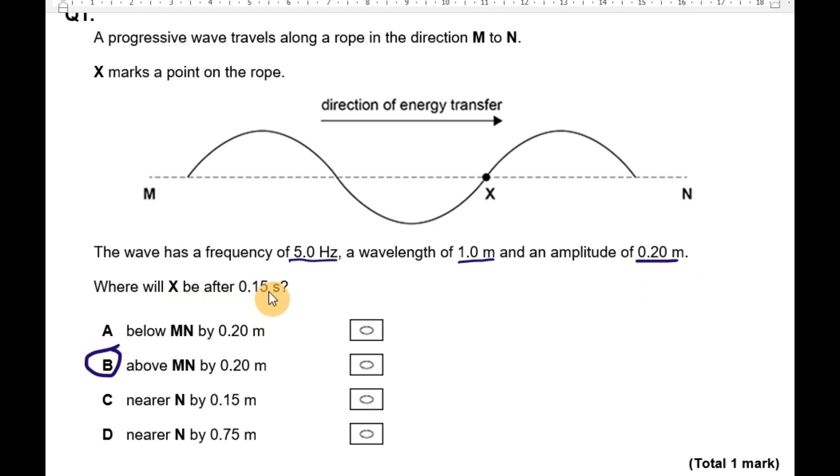Where will X be after 0.15 seconds? Well, X is a point on the wave, and given that this is a transverse wave, X is going to move at 90 degrees to the direction of wave travel.